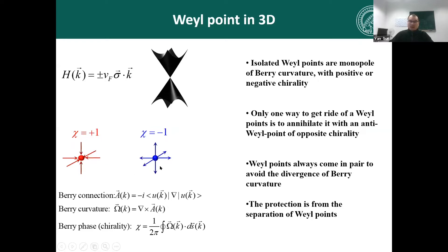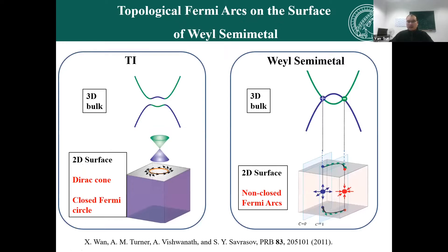The robustness of the Weyl semimetal is just determined by the separation of one pair of Weyl points. Because of the large Berry curvature, it has very special properties from both surface and bulk transport. From the surface point of view, it's different from topological insulators. For topological insulators, there is a surface Dirac cone protected by time reversal symmetry. But for Weyl semimetals, the surface state presents as non-closed Fermi arcs, starting from one Weyl point and terminating at the other.